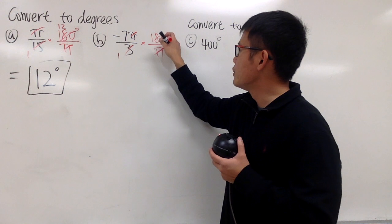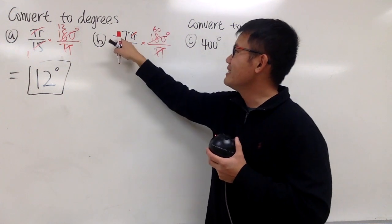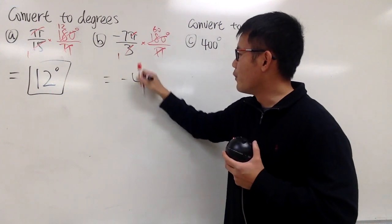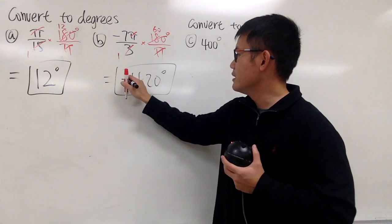3 goes into 3 one time, 3 goes into 180 60 times. And then this is negative 7 times 60. We get negative 420, and we still have degrees. So this is it.